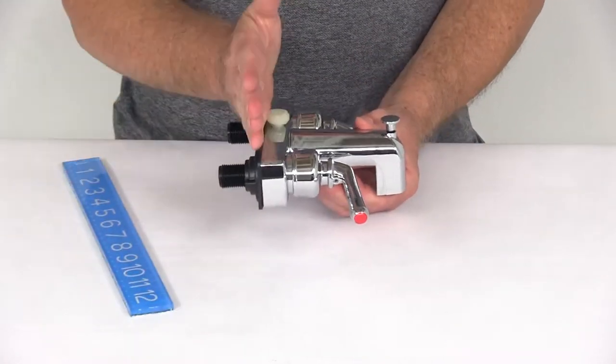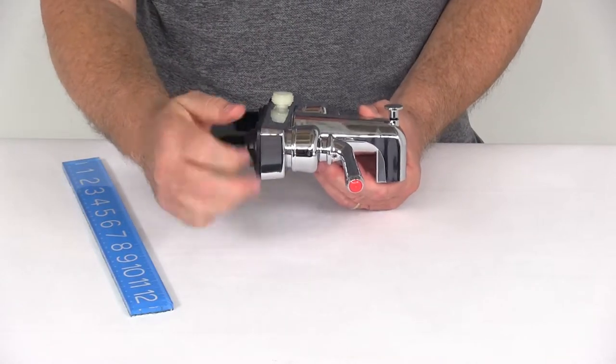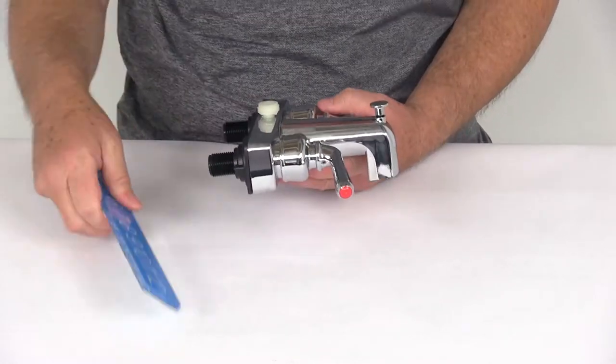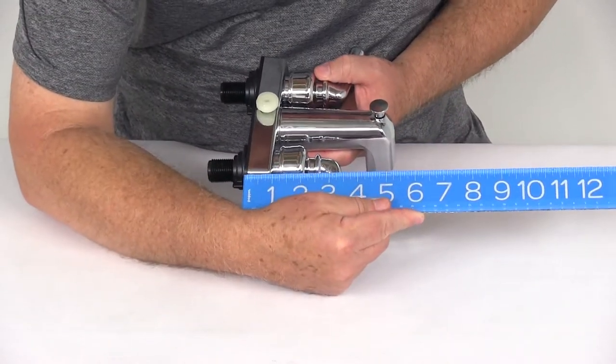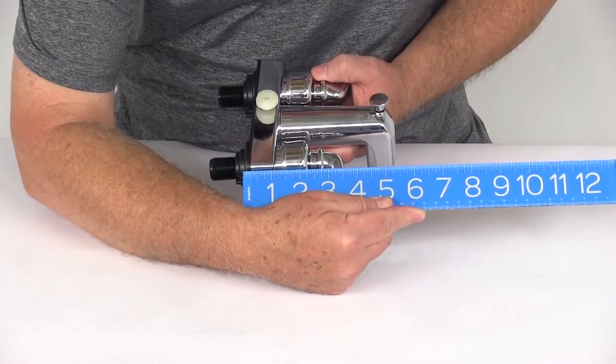The length, once this is installed to the wall from the back here of the base to the very edge of the spout, is going to be right at five and a quarter inches.